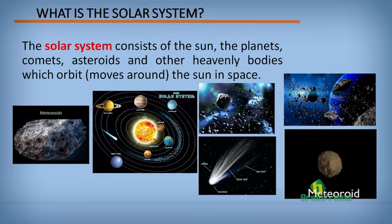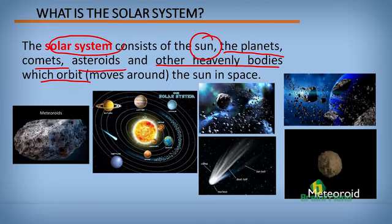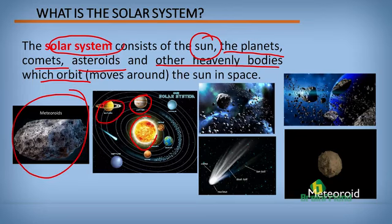What is the solar system? The solar system consists of the sun, the planets, comets, asteroids, and all the heavenly bodies which orbit — that is, move around the sun in space. This is a diagram showing what a meteorite looks like, and the solar system consists of the sun and other heavenly bodies and planets that orbit around it.